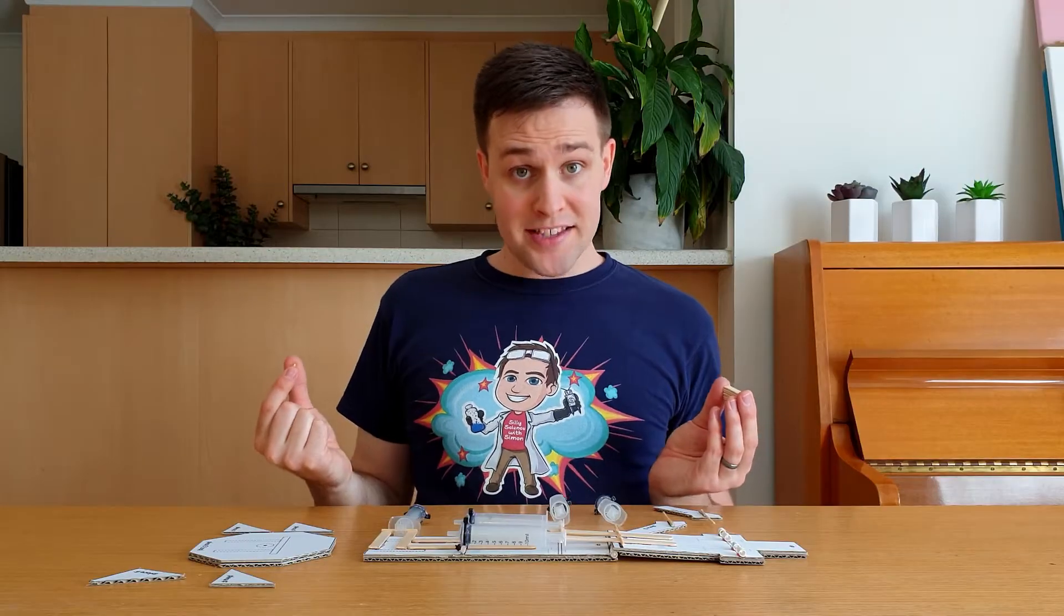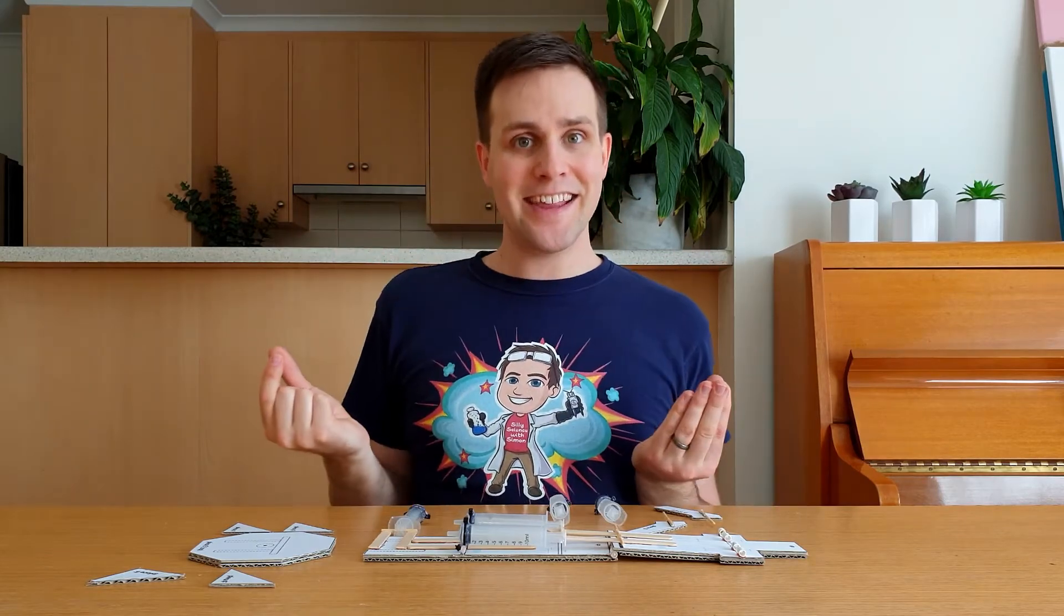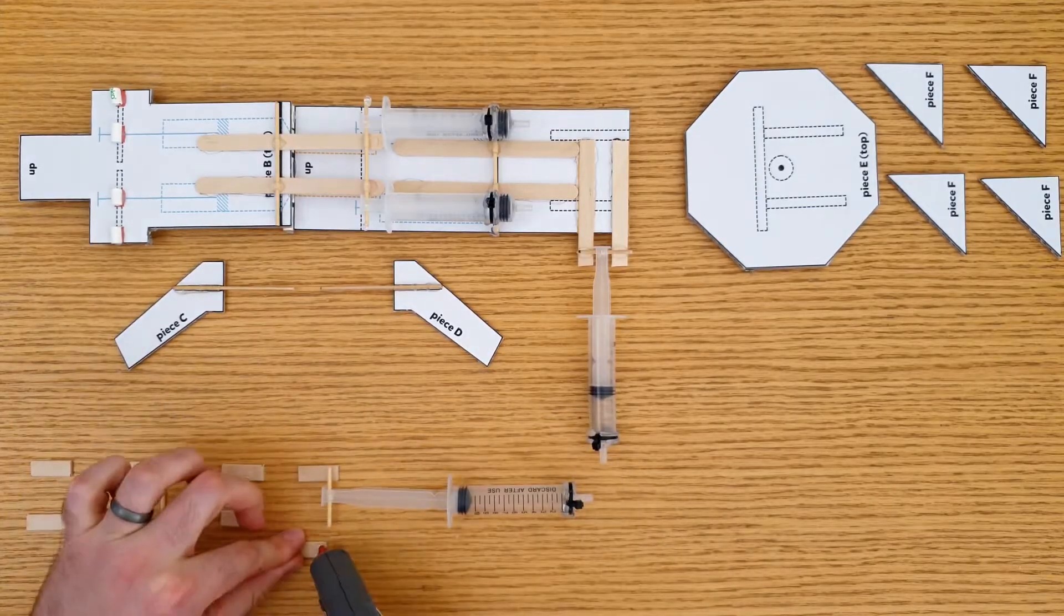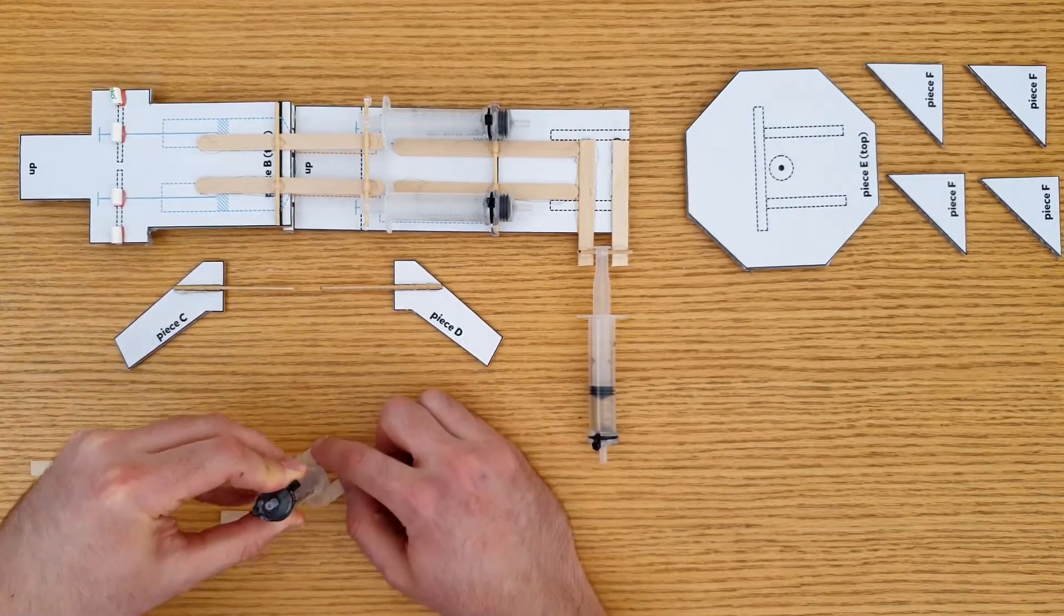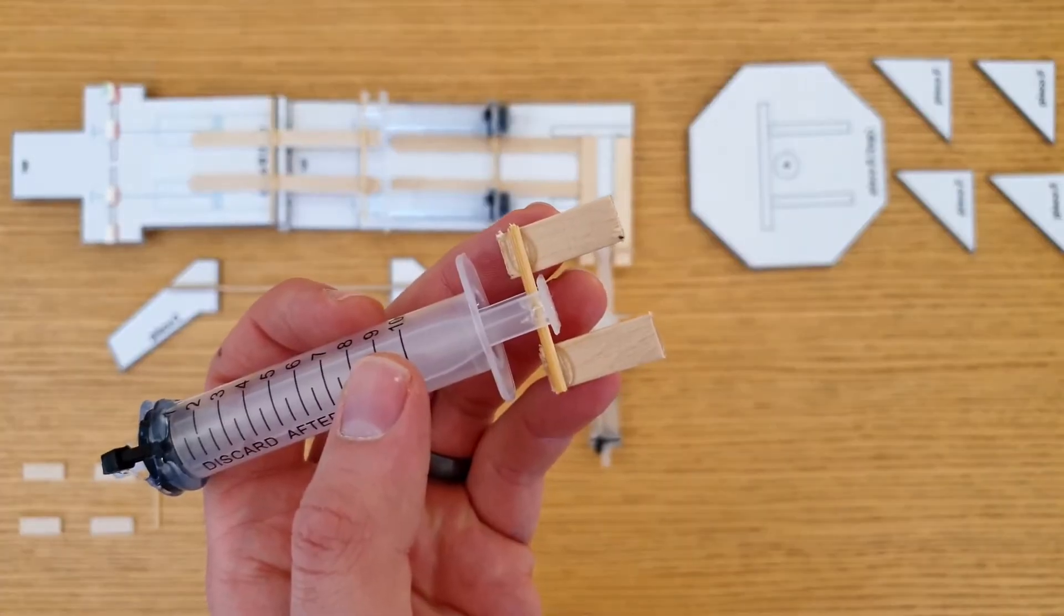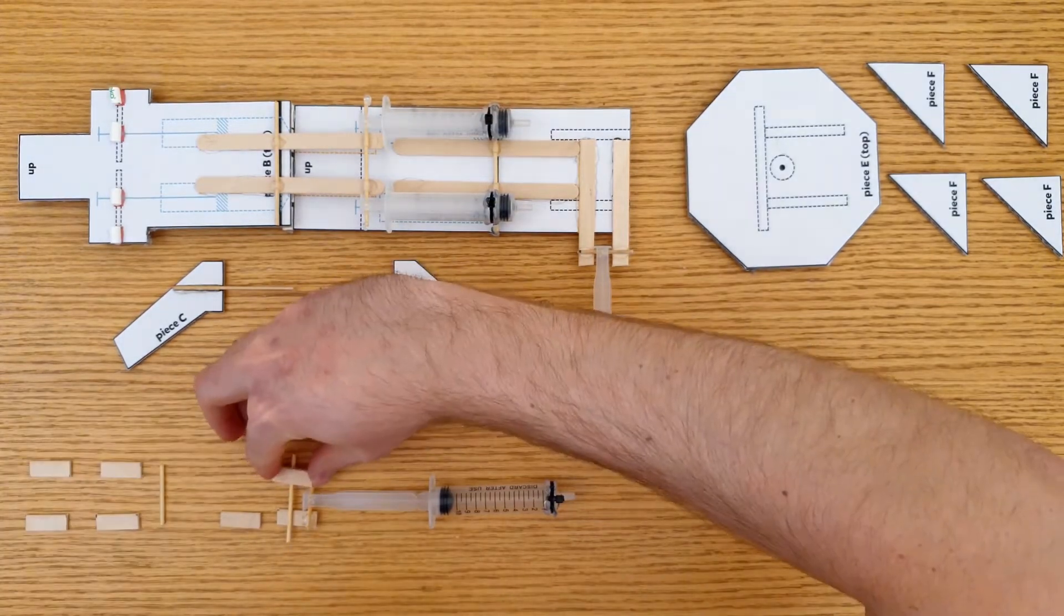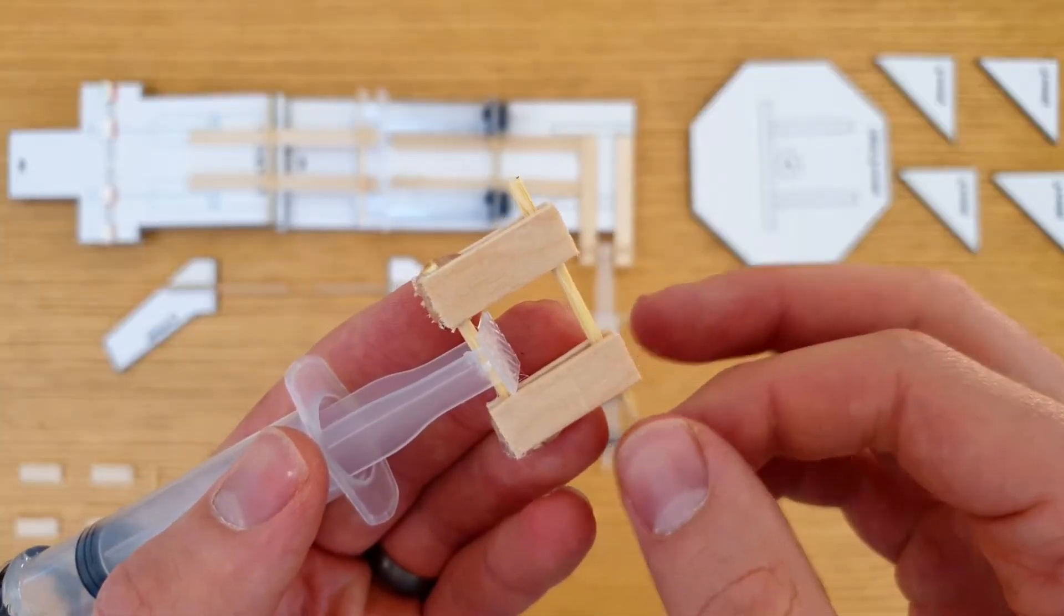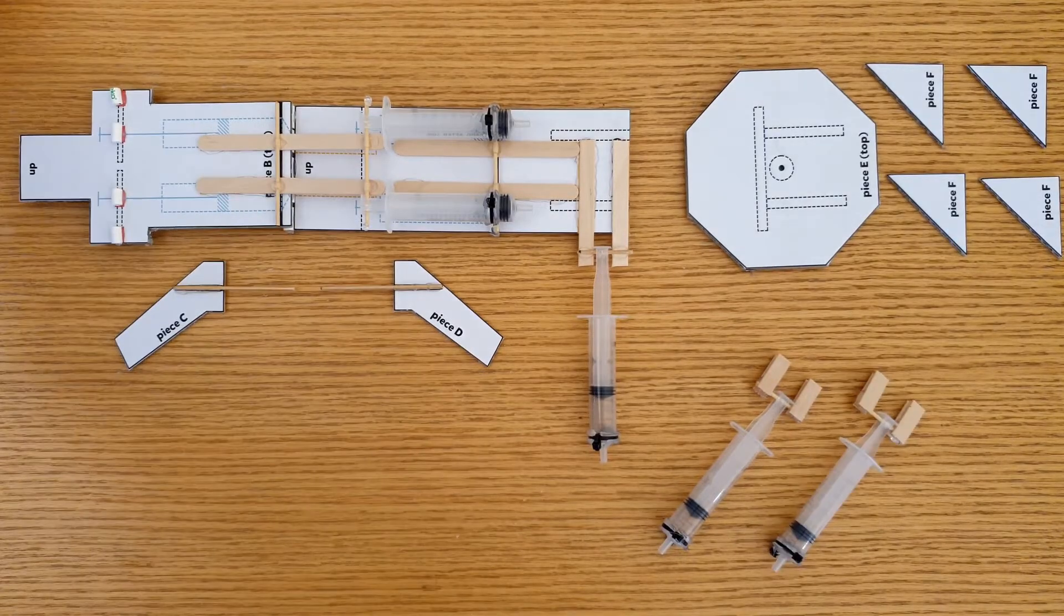We're now going to make something using the 8 pieces of pop stick and 2 pieces of skewer that we cut out earlier. Slide a syringe onto the skewer and then place it on 2 pop sticks like this, using a hot glue gun to glue them in place. Rest a spare piece of skewer here, and then glue 2 more pop sticks here. Once it dries, take the spare bit of skewer out. Repeat all of those steps to make another one.